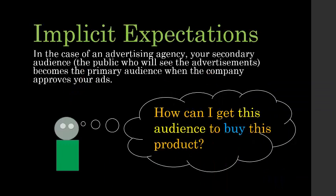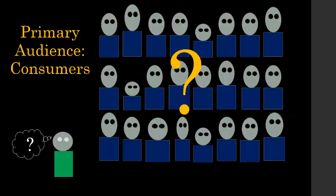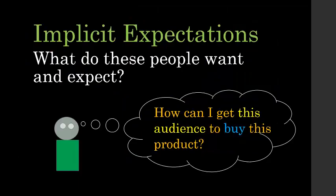In the case of an advertising agency, your secondary audience — the public who will see the advertisements — becomes the primary audience when the company approves your ads. So there are implicit expectations about audience here as well. You need to ask yourself: how can I get this audience to buy this product? This primary audience of consumers might be a mystery to you, so once again ask yourself: what do these people want and expect?